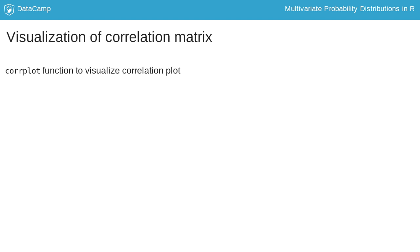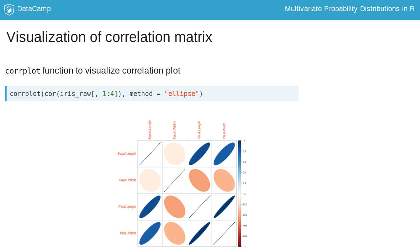The corrplot function from the corrplot library enables us to visualize correlations. Here, we use the argument method equals ellipse. The sign of the correlation is specified by the shade and the tilt of the ellipse, and the magnitude is specified by how much it differs in shape from a circle.